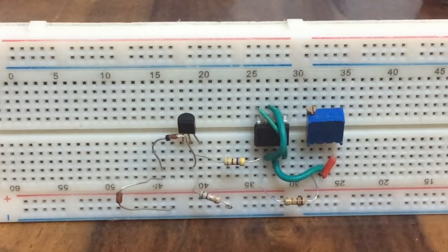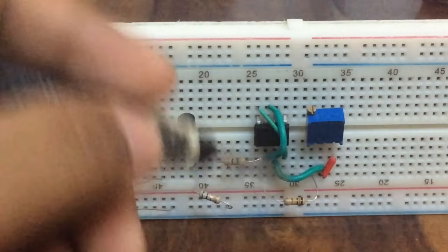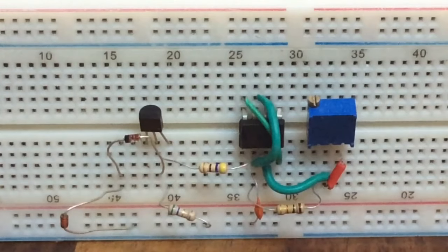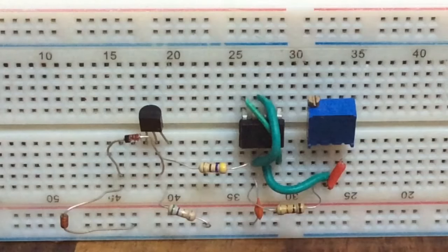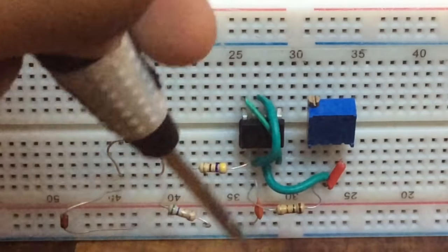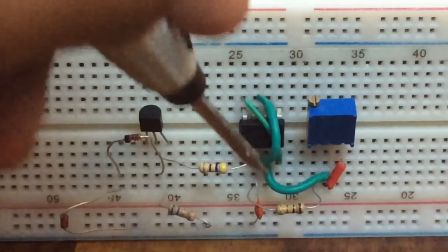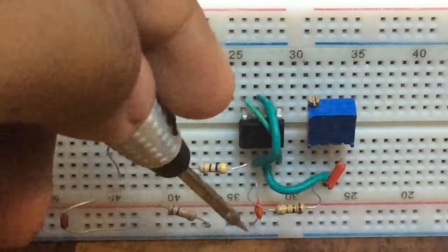Place the 10 nanofarad capacitor on the breadboard with one leg connected to pin 2 of the IC and the other leg to the negative rail of the breadboard. Connect pin 1 of the IC to the negative rail of the breadboard.